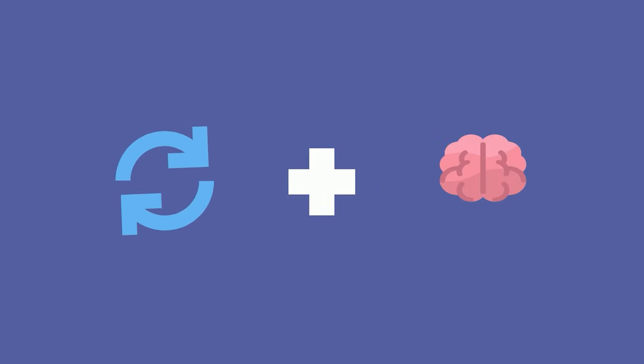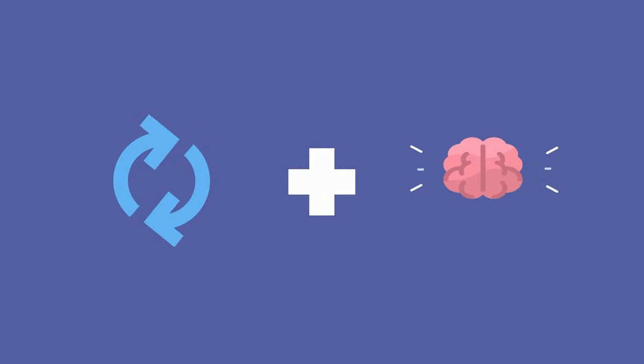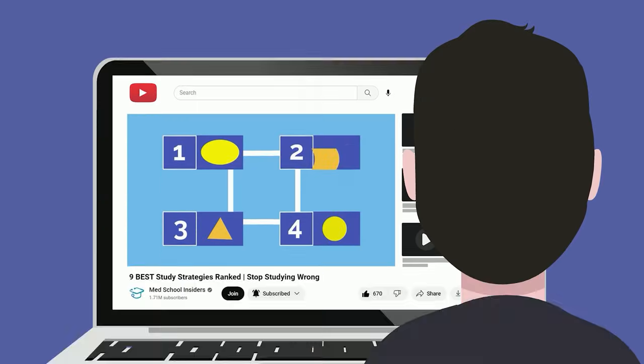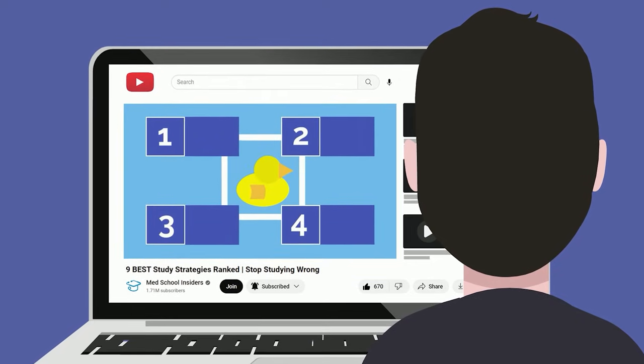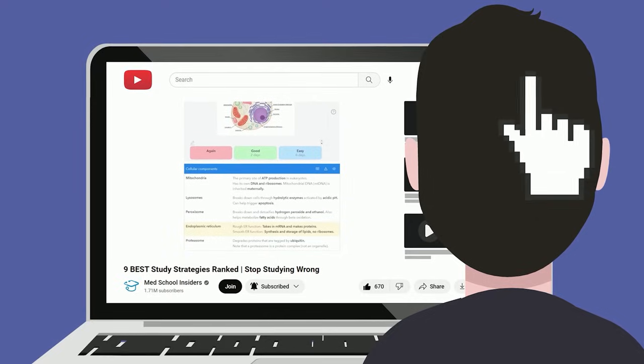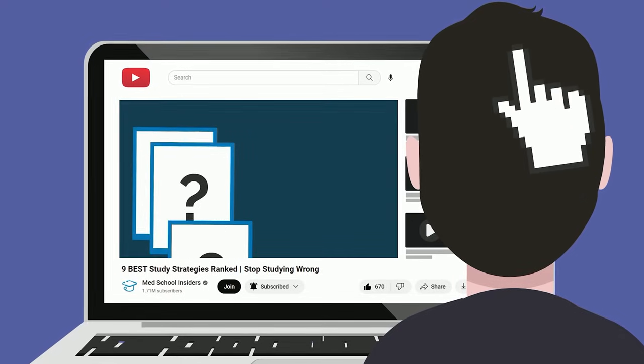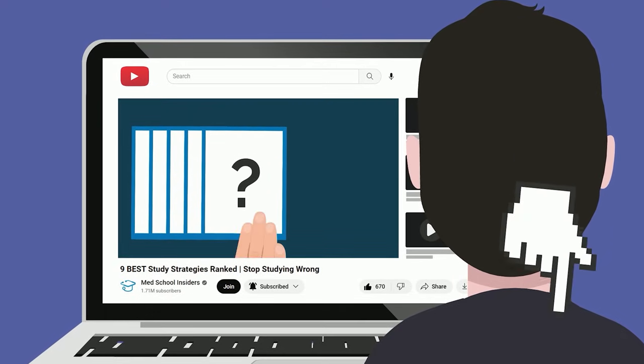Spaced repetition combined with active recall is the most effective way to memorize information. In fact, we ranked these two active study strategies in place number two and number one, respectively, when we ranked the best study strategies from nine to number one. Check out that video right up here and linked in the description.